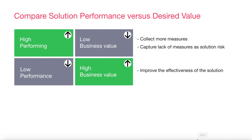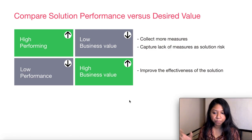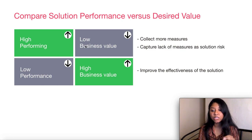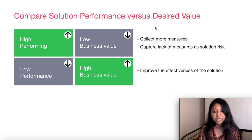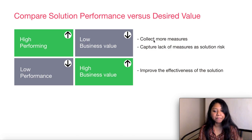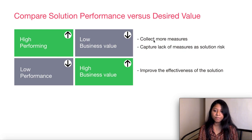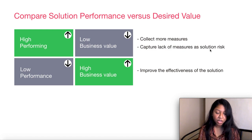The first consideration is comparing solution performance against the desired value. One scenario is where the solution is high-performing but still providing low business value. In that case, you may need to collect more metrics to justify the value the solution is providing. If there are no more measures available, that becomes a solution risk — if you can't test whether a solution is actually providing value, you can't decide whether to continue investing in it. You need to treat and mitigate that risk like any other risk.